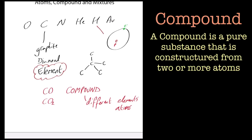An atom itself is an individual fundamental building block of matter — it's the uncuttable part. For carbon, it has a mass number of 12 and an atomic number of 6, which means it has 6 protons and 6 neutrons. Nothing in chemistry can get smaller than this; once you cut further it goes into physics.